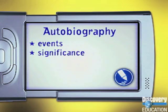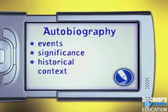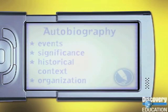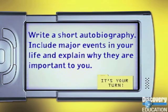An autobiography describes events that happen in one's own life. The personal significance of these events is important. Details provide the historical context in which the events took place. Finally, an organized structure — often chronological — provides order to the story. Write a short autobiography: include the major events in your life and explain why they are important to you.